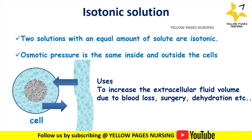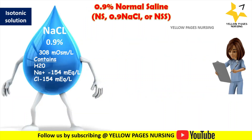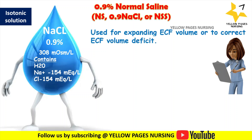The most commonly used isotonic solution is normal saline. Its osmolality is 308 milli-osmol per liter. Normal saline contains water, sodium, and chloride in equal proportions — 154 milli-equivalent per liter. It is mainly used for expanding extracellular fluid volume and correcting extracellular fluid volume deficit, which may be due to hemorrhage, severe vomiting, diarrhea, or GI suction.